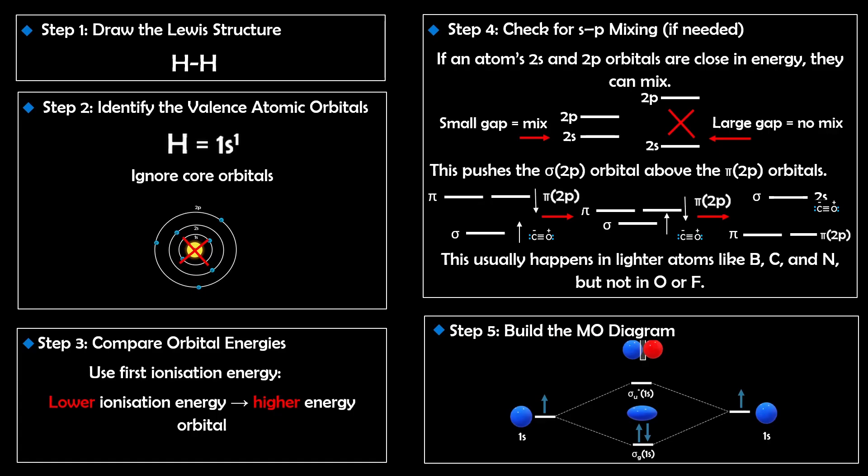Step 5: Actually build the molecular orbital diagram. Arrange the orbitals from lowest to highest energy, starting with sigma and pi, then the antibonding sigma and anti-pi orbitals. Label everything clearly. For molecules with the same element, you can use g (gerade) or u (ungerade) for symmetry labels. Then count the total number of valence electrons, fill the orbitals from lowest to highest energy — one electron per orbital before pairing, and a maximum of two electrons per orbital with opposite spins, remembering the Pauli exclusion principle.